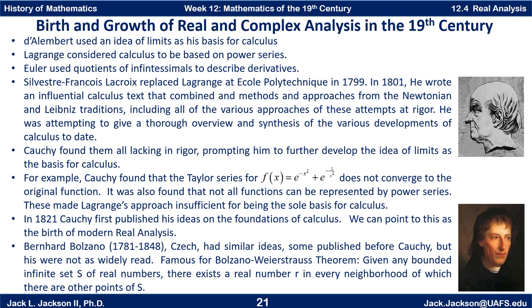Interestingly, Bernard Bolzano, born in 1781 and died 1848, was a Czech who had some very similar ideas, and some of them were even published before Cauchy's. But being a Czech, that wasn't where the main mathematical thrust was at the time, and a lot of his work was not as widely read since he wrote in his own language rather than French, German, or English. He is now famous for the Bolzano-Weierstrass theorem: given any bounded infinite set of real numbers, there exists a real number R in every neighborhood of which there are other points of the set.